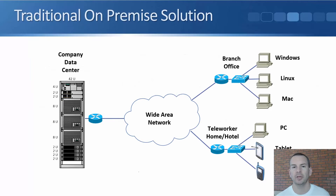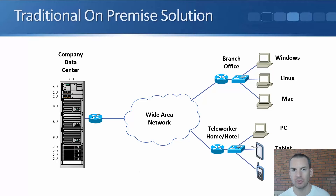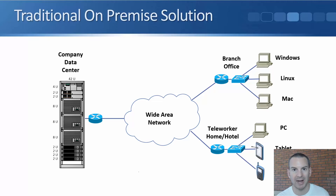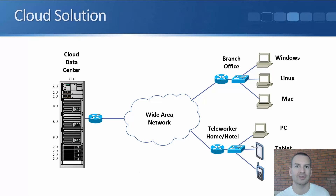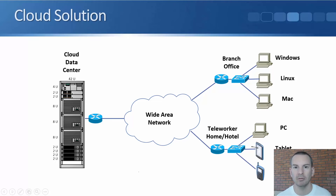If you remember back from the broad network access lesson, we covered how the network looks in a traditional on-premise solution when accessing our servers in the company data center from branch offices or from teleworkers working from a hotel or home. That's how we do the network design for a traditional on-premise solution. And how the network looks for a cloud IaaS solution is exactly the same — the only difference is that the servers are now in the cloud provider's data center rather than ours. So for doing the design, we do it just the same way as we've always done it traditionally.